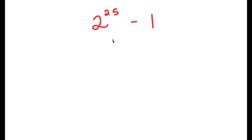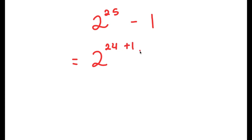In this video, I'm going to solve the problem 2 to the power of 25 minus 1. To start, I'm going to rewrite 2 to the power of 25 as 2 to the power of 24 plus 1, and then we have our minus 1 at the end.